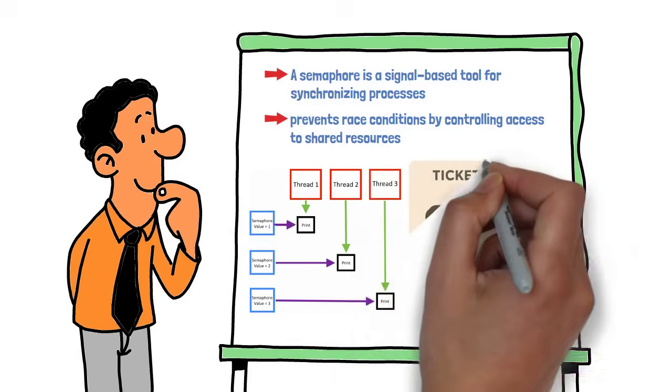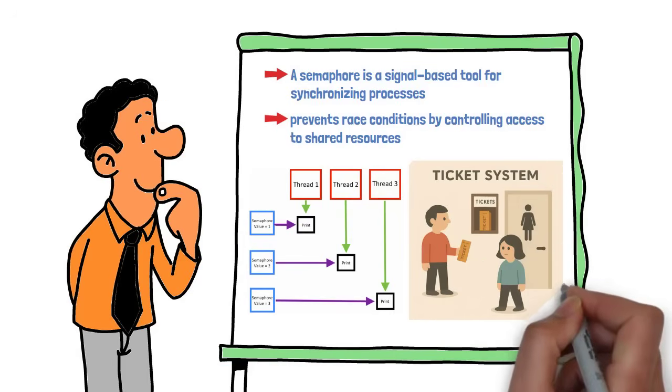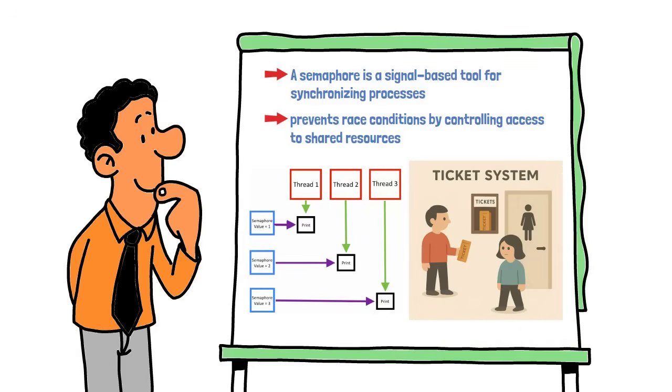Think of it as a ticket system for a bathroom with limited stalls. Each person takes a ticket upon entering and returns it when leaving. If all tickets are taken, newcomers must wait until someone returns a ticket, ensuring we never exceed capacity.